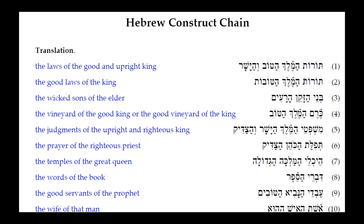Number two: Torot HaMelek HaTovot. Here we look at the adjective — the Oat ending tells us it is feminine plural, agreeing with Torot and not HaMelek, because HaMelek is masculine. So we would say 'the good laws of the king.'